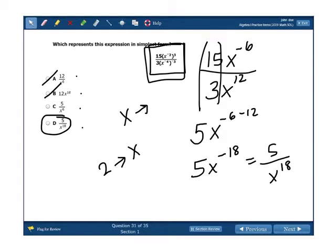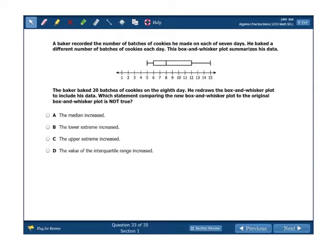A baker recorded the number of batches of cookies he made on each of seven days. He baked a different number of batches of cookies each day. This box-and-whisker plot summarizes his data. The baker baked 20 batches of cookies on the eighth day, so now we're taking the value, the number 20, and we're putting into this data set.